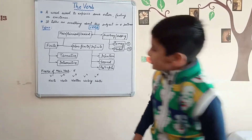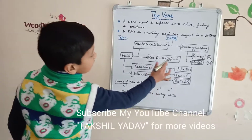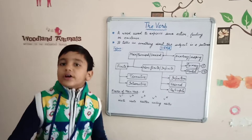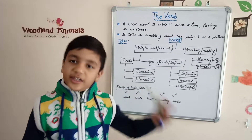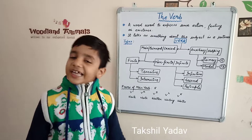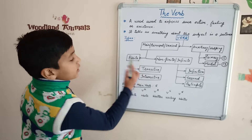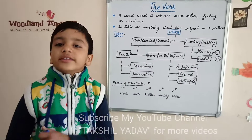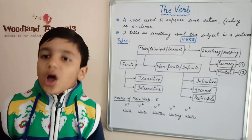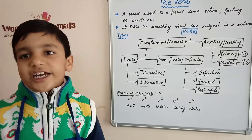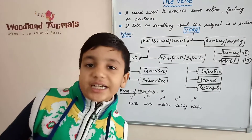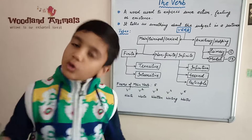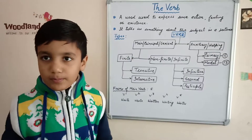Main verb is divided into finite and non-finite verbs. A finite verb is limited according to the number, person, and tense of its subject. Non-finite verbs, on the other hand, do not change in a sentence according to their subject's number, person, or tense. They are known as non-finite or infinite verbs.